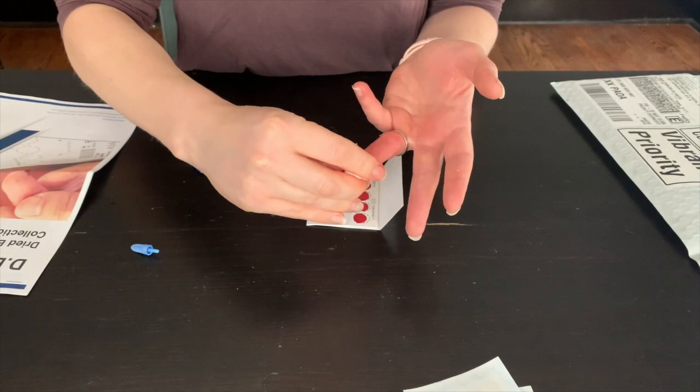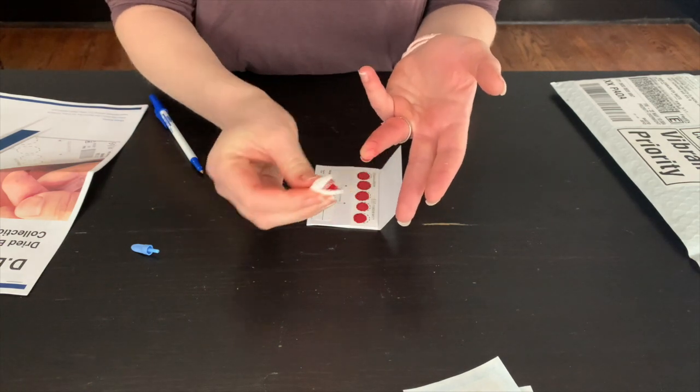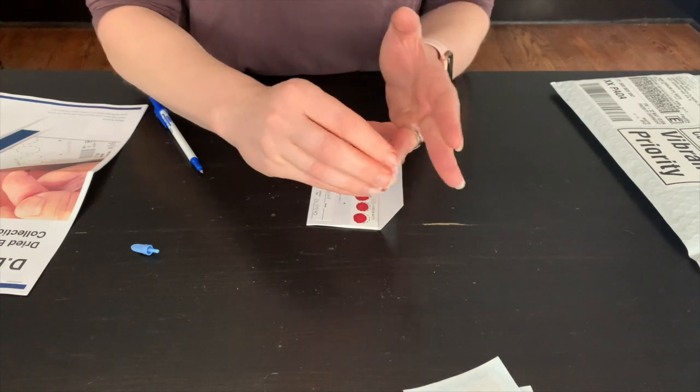Once you have filled all of the circles on the specimen collection card, use your gauze pad to wipe away any remaining blood from your finger. Apply pressure to it and then apply the bandage.